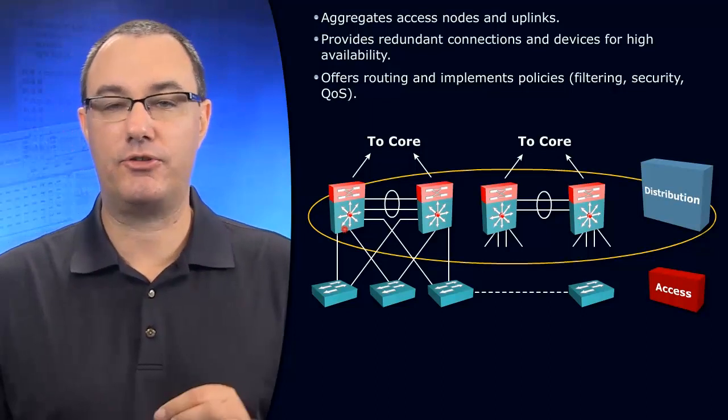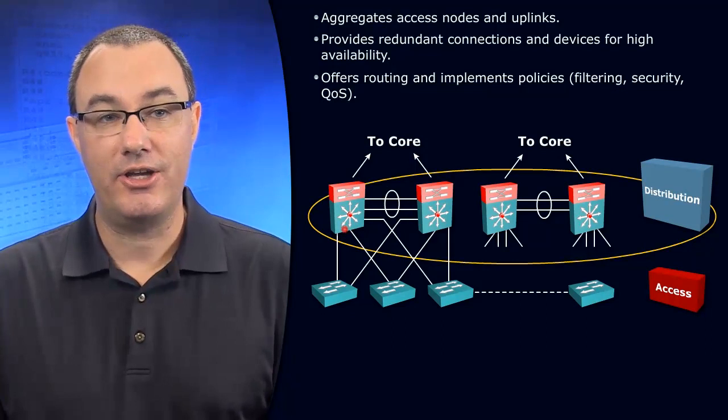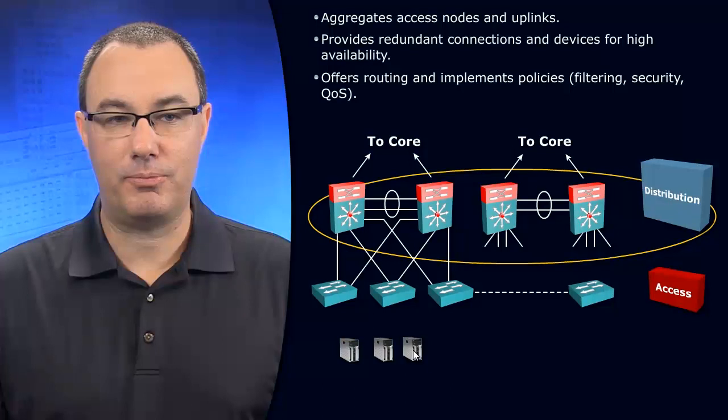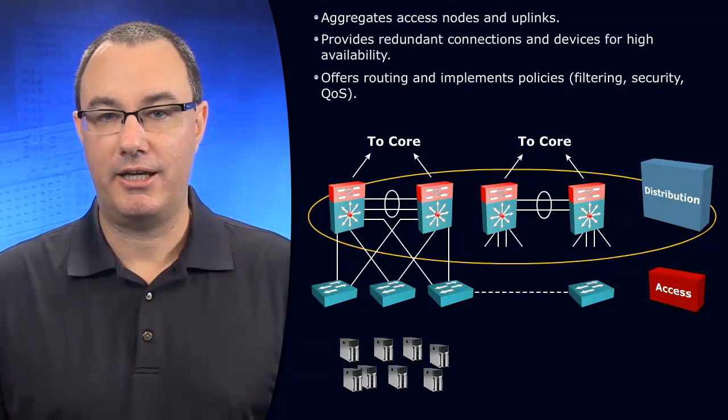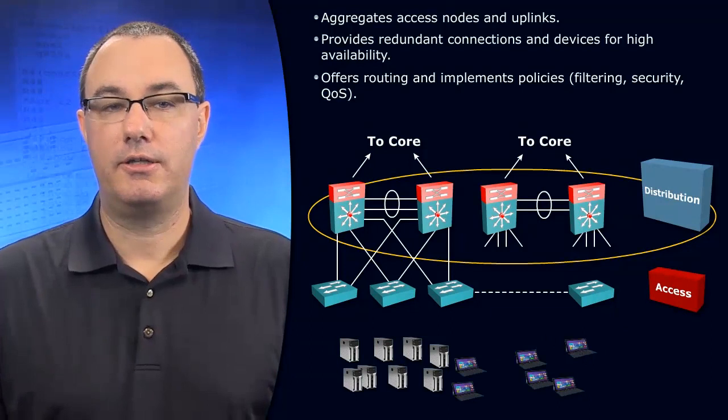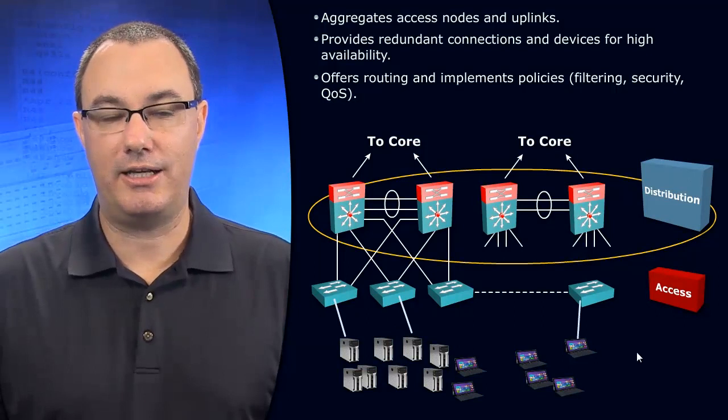...that these devices serve as the default gateways for the clients that exist within the subnet. So I'm going to have lots of clients plugged in here, and they're going to have connections to the layer two switches. Who's their default gateway?